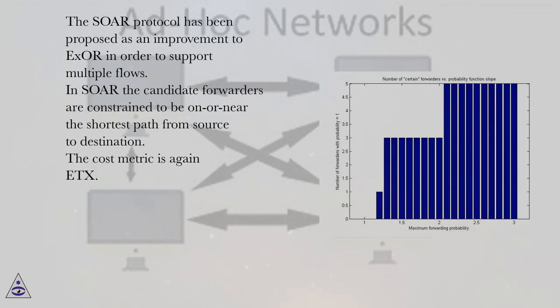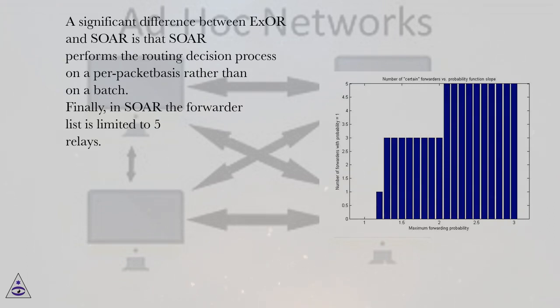The SOAR protocol has been proposed as an improvement to ExOR in order to support multiple flows. In SOAR the candidate forwarders are constrained to be on or near the shortest path from source to destination. The cost metric is again ETX. A significant difference between ExOR and SOAR is that SOAR performs the routing decision process on a per packet basis rather than on a batch. Finally, in SOAR the forwarder list is limited to 5 relays.